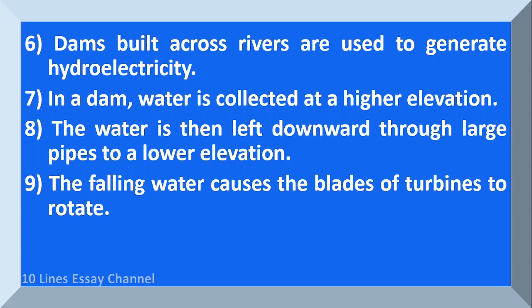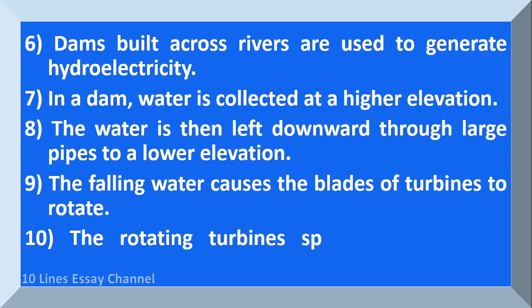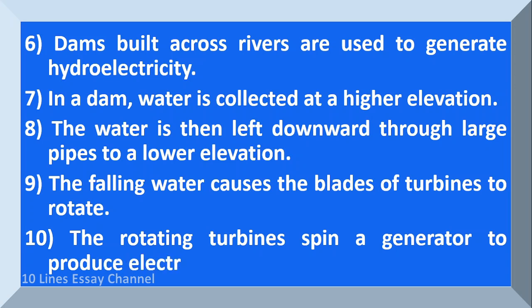The falling water causes the blades of turbines to rotate. The rotating turbines spin a generator to produce electricity.